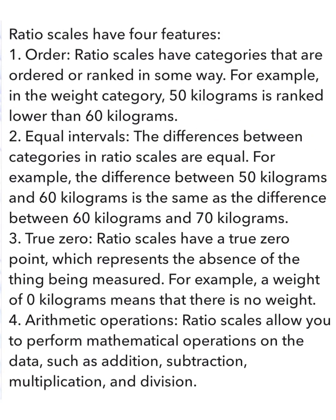Features of Ratio Scale. First is Order — we always divide data into categories in order and rank. For example, a weight of 50 kg is less than 60 kg. Second is Equal Interval — the differences are equal intervals. Third is True Zero — in ratio scales there is a true zero point, meaning zero weight represents no weight at all. Fourth is Arithmetic Operations — Ratio Scale allows addition, subtraction, multiplication, and division on your data.